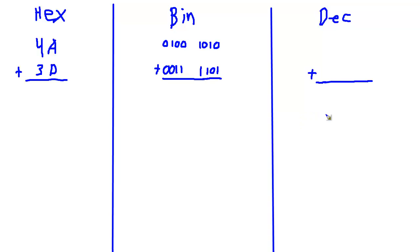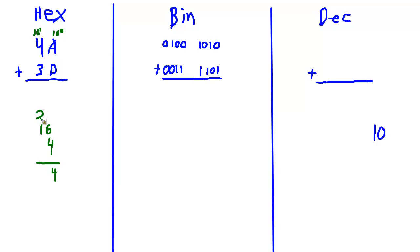Now decimal is base 10, which isn't a power of 2, so it doesn't neatly fall into those groups. We have to use the longhand conversion technique. A is 10, and this digit is 16 to the 0, so A times 1 is 10. Then the 4 digit is 16 to the 1, so 4 times 16. Well, 4 times 16: 4 times 6 is 24, carry 2, 4 times 1 is 4, plus 2 is 6 — that's 64. So 64 plus 10 makes 74. Our first decimal value is 74.